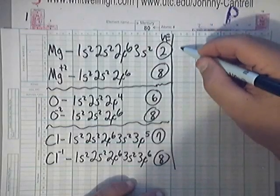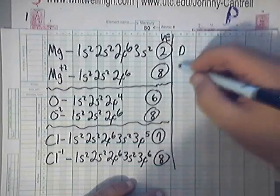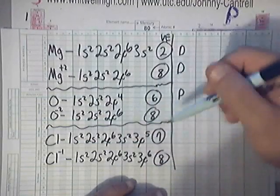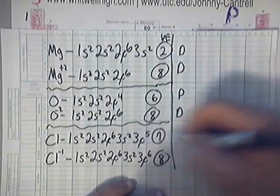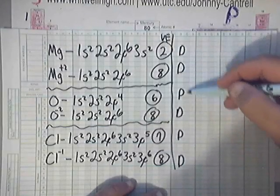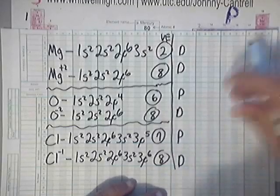Everything's filled here, so that's done. That's diamagnetic. This one, everything's full. It's diamagnetic. This one's partially filled, so it's P. This one is now done. This one is partially filled. And this one is now done. So, diamagnetic, diamagnetic, paramagnetic, diamagnetic, paramagnetic, and diamagnetic.